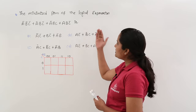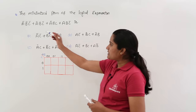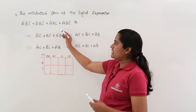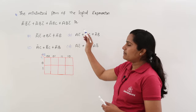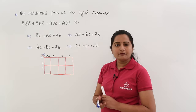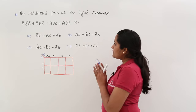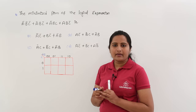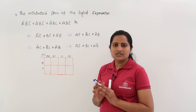The minimized form of the logical expression: a·b̄·c̄ + ā·b·c̄ + ā·b·c + a·b·c̄. Four options are given. First of all, see here how many variable K-map we need to consider for this problem.